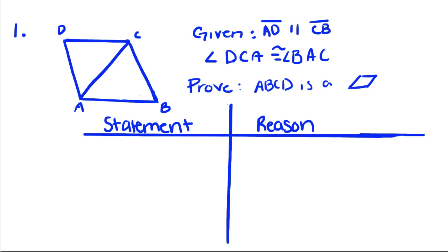Okay, so given that AD, which is this line right here, is parallel to CB, and that angle DCA is congruent to angle BAC, prove that ABCD is a parallelogram.